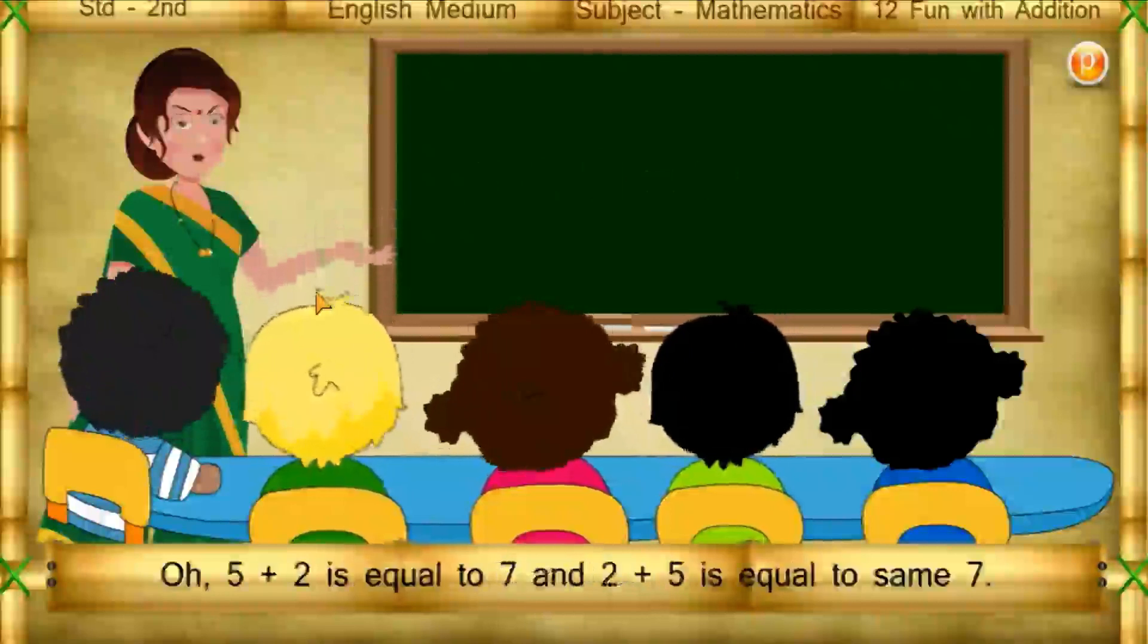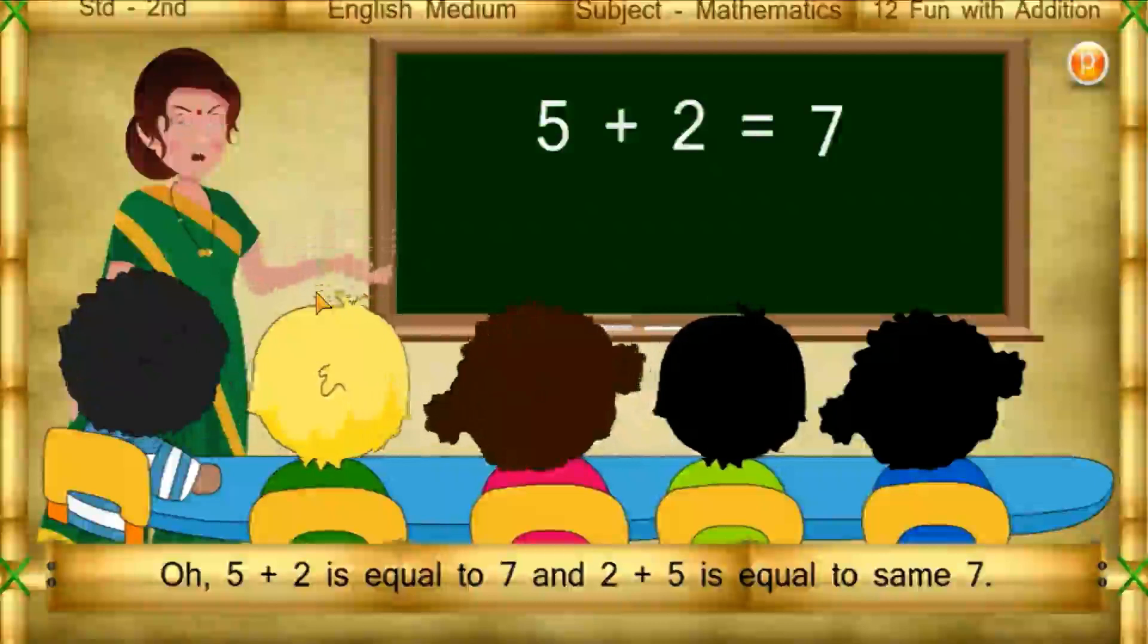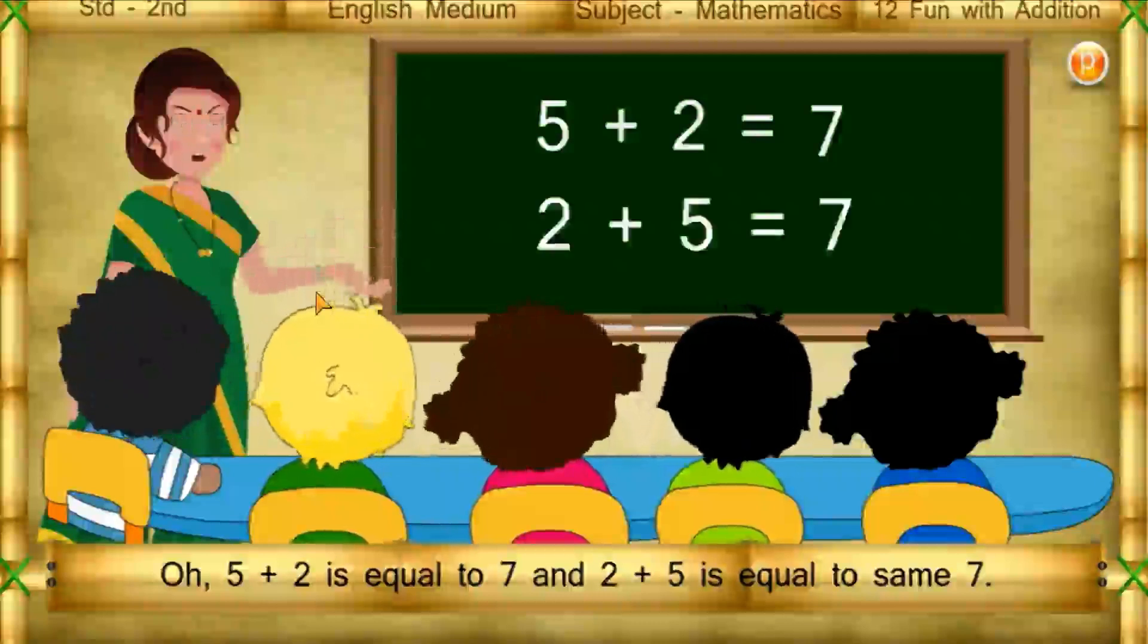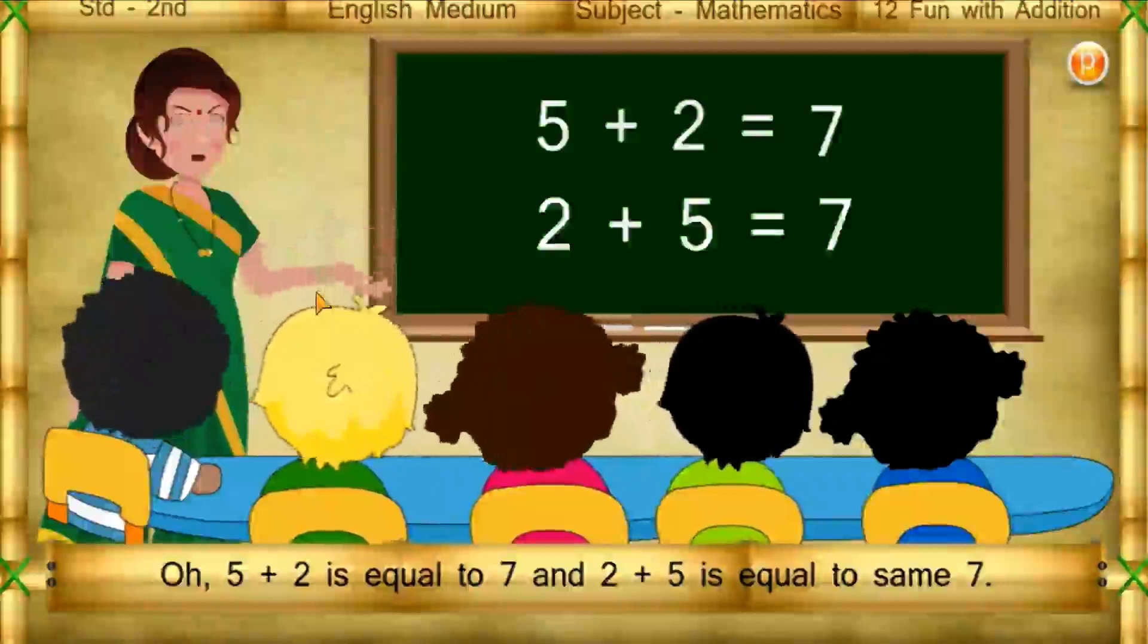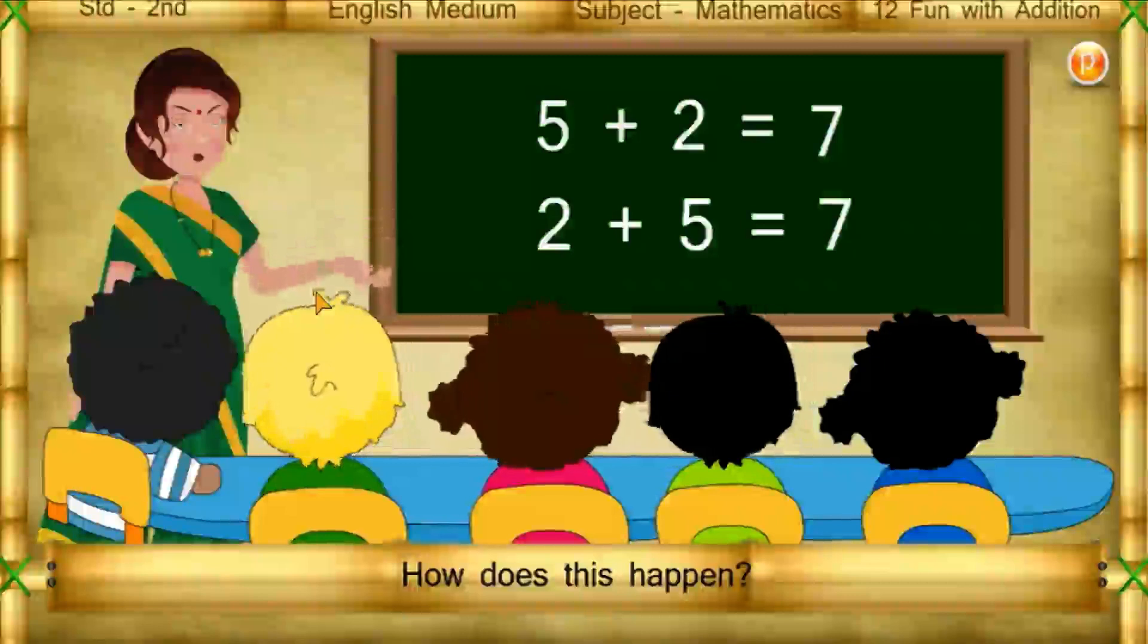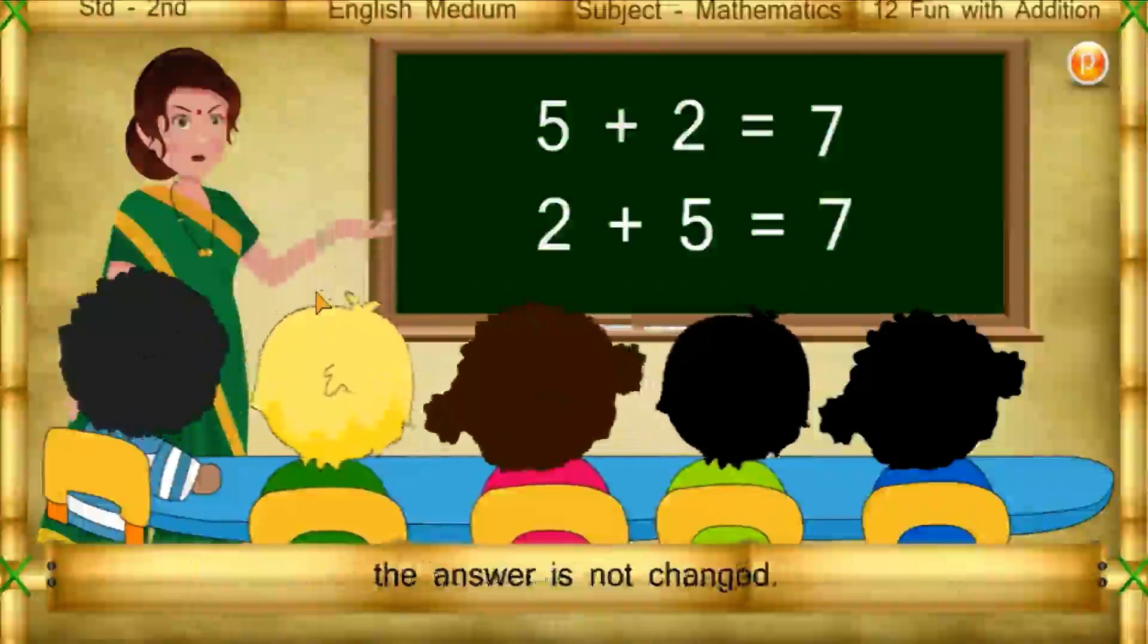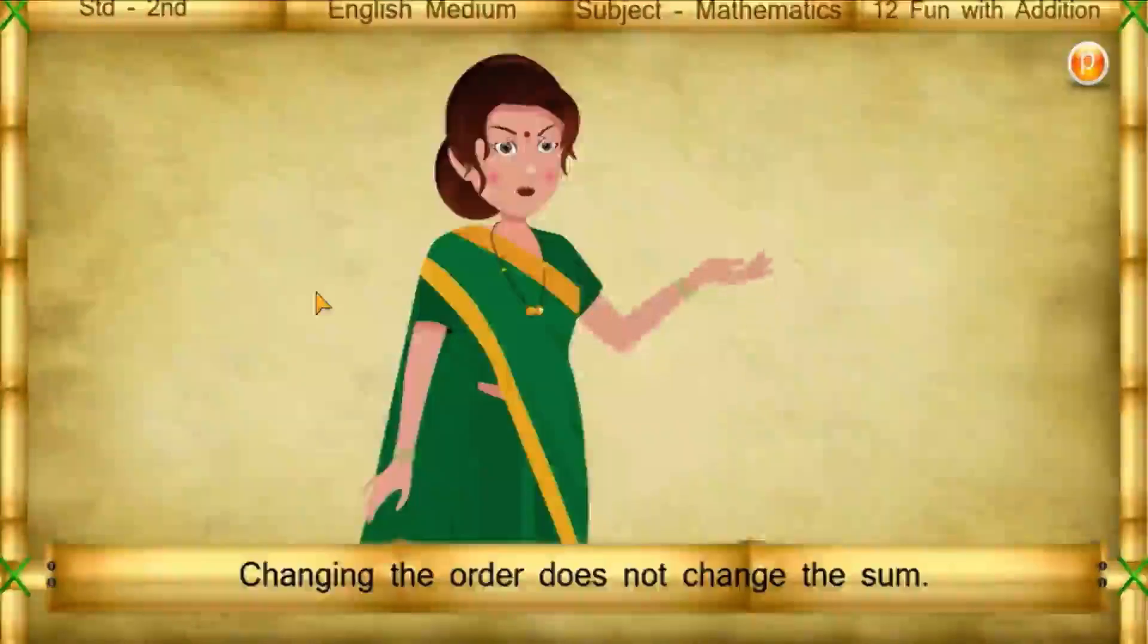Oh, 5 plus 2 is equal to 7 and 2 plus 5 is equal to same 7. How does this happen? Because when the sequence of numbers is changed, the answer is not changed. Changing the order does not change the sum.